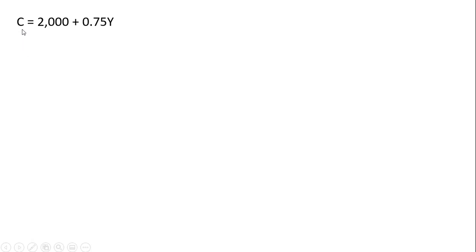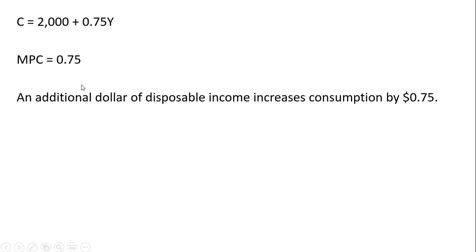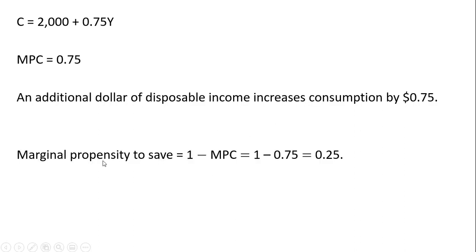Here is a consumption function. The marginal propensity to consume is just the coefficient in front of the Y variable — 0.75 — and that means an additional dollar of disposable income increases consumption by 75 cents. The marginal propensity to save is just one minus the marginal propensity to consume, so in this example the marginal propensity to save is 0.25.